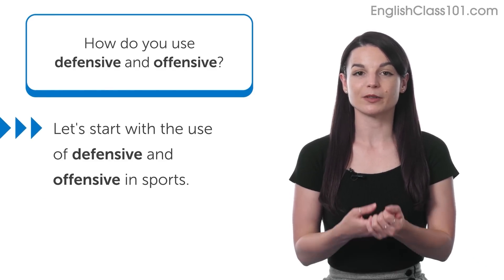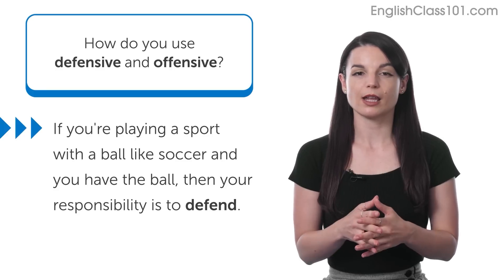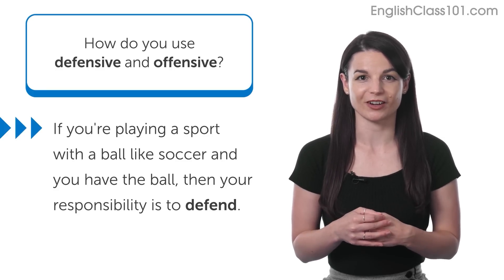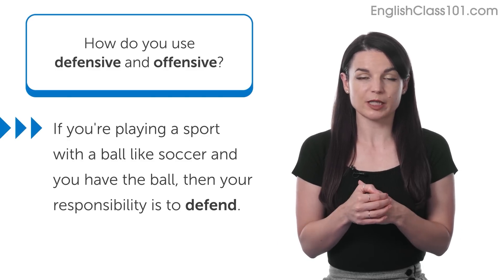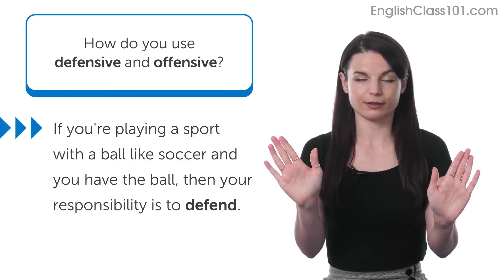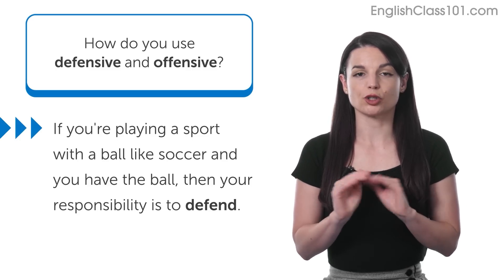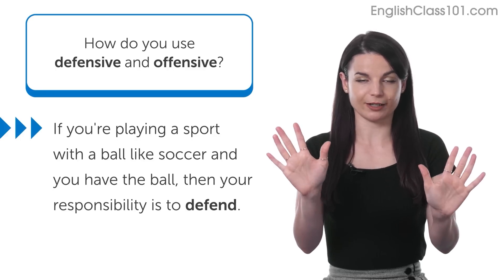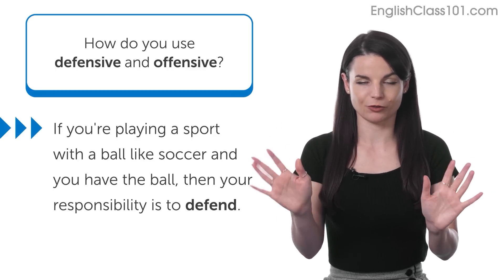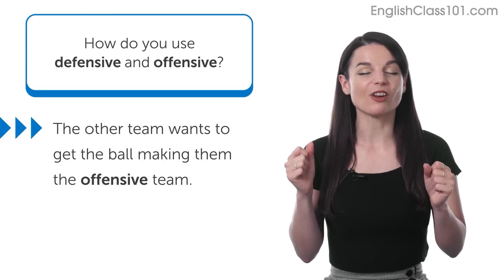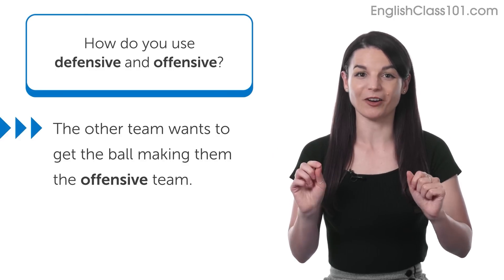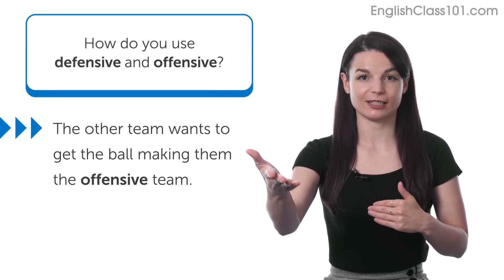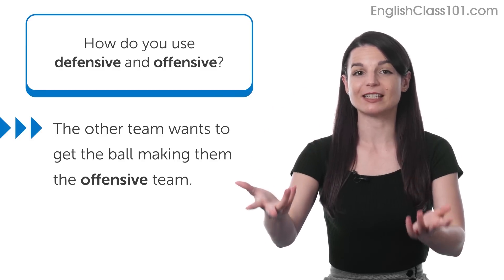Let's first talk a little bit about sports. If you're playing a sport like soccer and you have the ball, your responsibility is to defend — you want to keep the ball and do everything you can with your team to protect it and score a goal. The other team wants to do everything they can to get the ball and use it to score a goal. They are the offensive team. So we call that the offense or the offensive team.